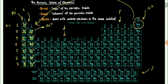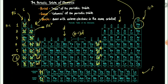Since d orbitals follow (n-1)d, the first d column in period 4 is 3d1, period 5 is 4d1, period 6 is 5d1, and period 7 is 6d1 — continuing to 3d10, 4d10, 5d10, 6d10 across the d-block. Since f orbitals follow (n-2)f, with period 6 giving 6 minus 2 = 4f, the f-block starts at 4f1 and 5f1, continuing to 4f14 and 5f14. Lutetium and Lawrencium are the 5d1 and 6d1 elements respectively.